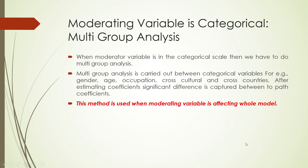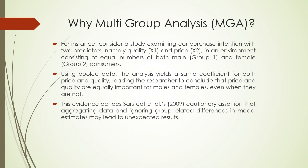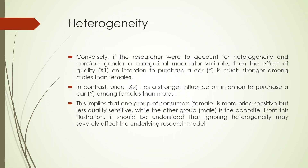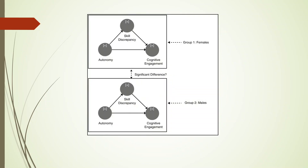Now it can be the scenario that the moderator is affecting the entire model — in that case we adopt multi-group analysis. This means the moderating variable is affecting the whole model. For example, consider a car purchase intention model consisting of quality, price, and environment. A model where autonomy affects cognitive engagement, and autonomy going through goal discrepancy also affects cognitive engagement. The question is: are these path relations significantly different in male and female?